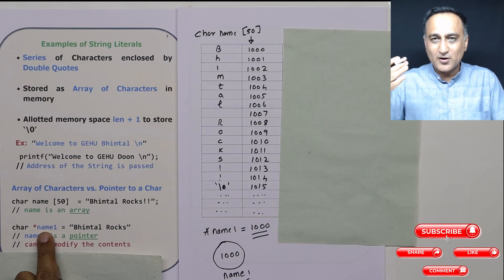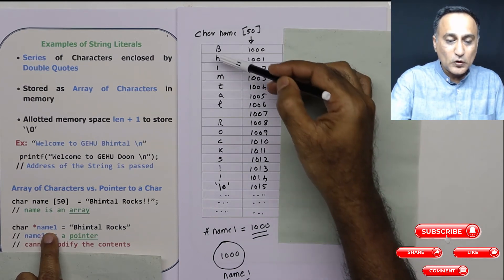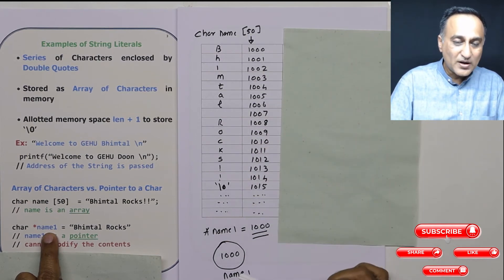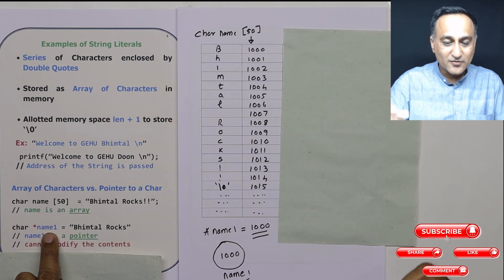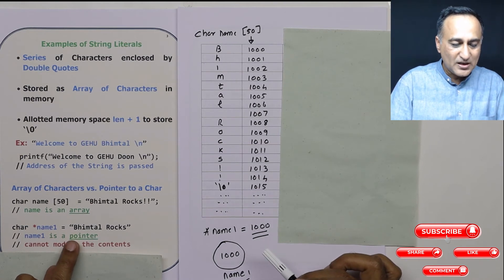You can see in the circular box, address of B is 1000. Name1 itself may exist at another location, let's say 5000, 10000, whatever it is does not matter. Name1 is not going to contain data like this array fellow is. Name1 is simply going to contain the address of the B or the 0th element of the array. In this case it is address of B which happens to be 1000.